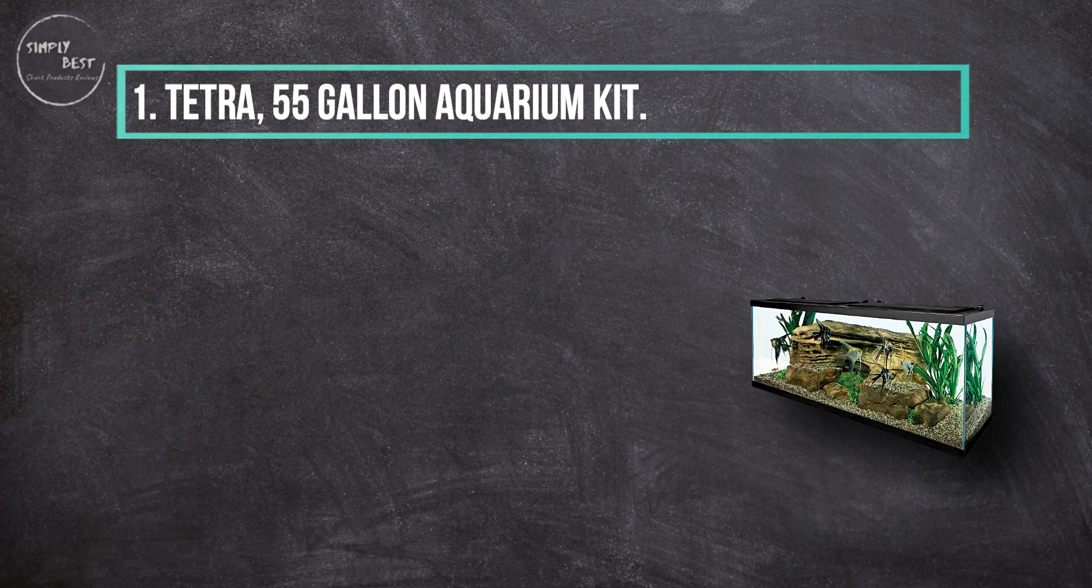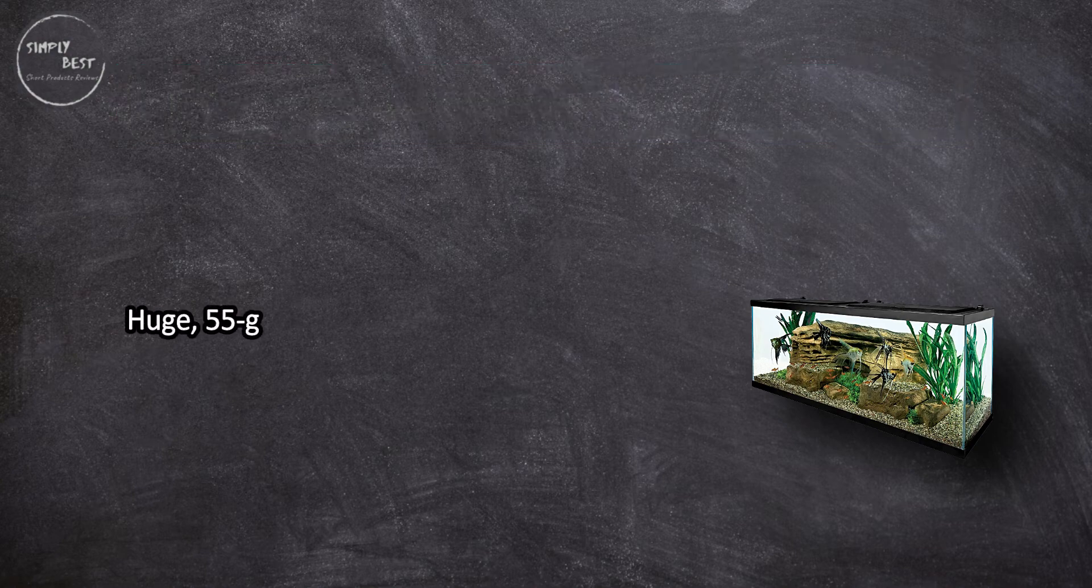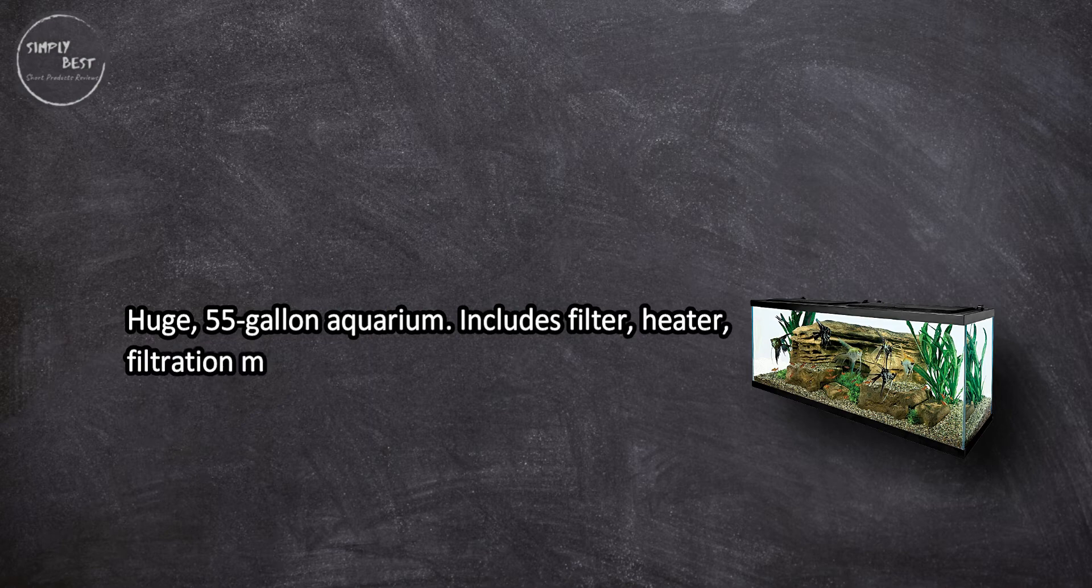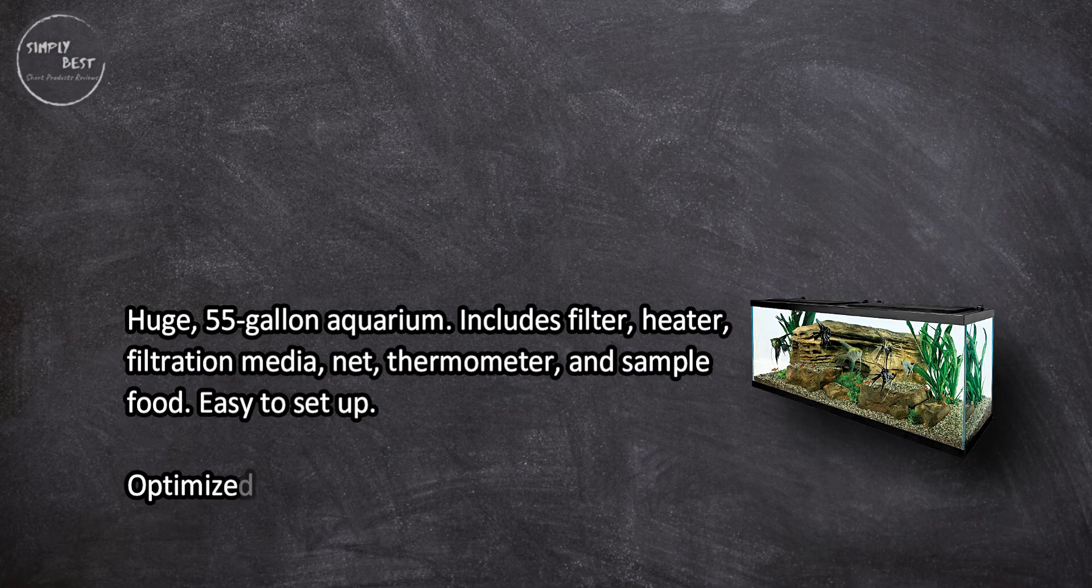At number one, Tetra 55 gallon aquarium kit: huge 55 gallon aquarium, includes filter, heater, filtration media, net, thermometer, and sample food. Easy to set up, optimized for larger tropical species and schools.